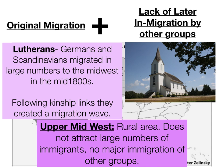Much like Utah, the upper Midwest is a rural area and does not attract a large number of international immigrants. There have been no major subsequent migrations of other groups, and thus the area remains predominantly Lutheran to this day.